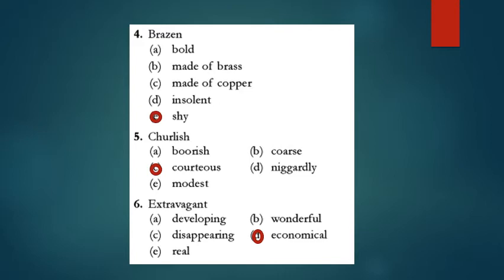Let's take up the fourth word, brazen. Brazen means very bold or without shame. Insolent also means very rude, arrogant. So the only antonym will be shy. Churlish means very rude and boorish, bad-mannered, coarse, rough, niggardly means miserly. So the right answer will be courteous - having courtesy. Extravagant means spendthrift, so the opposite will be economical.